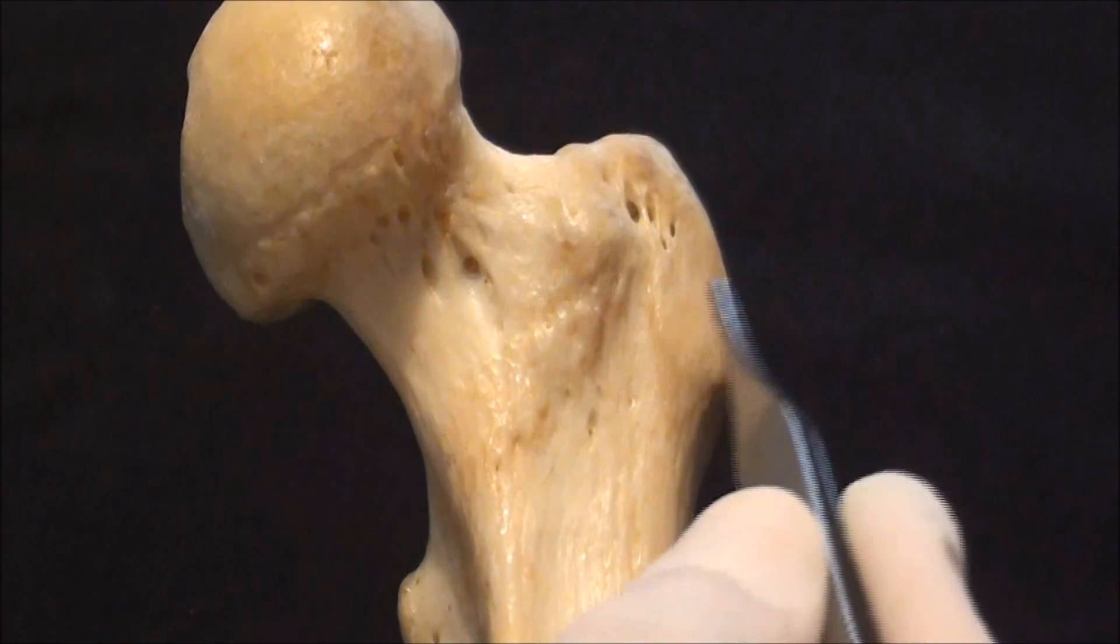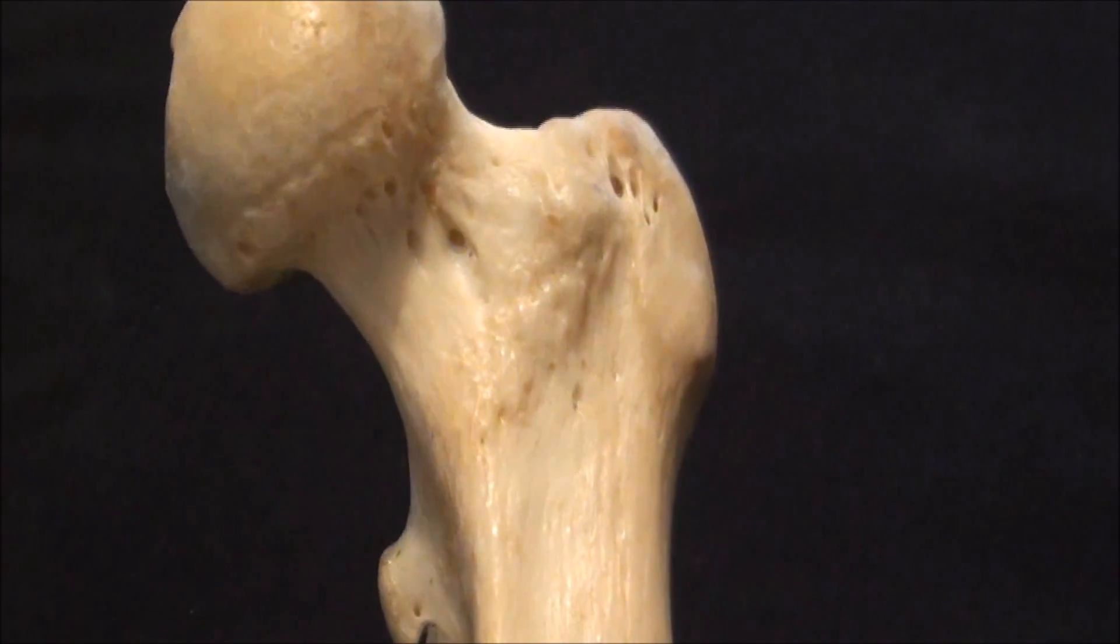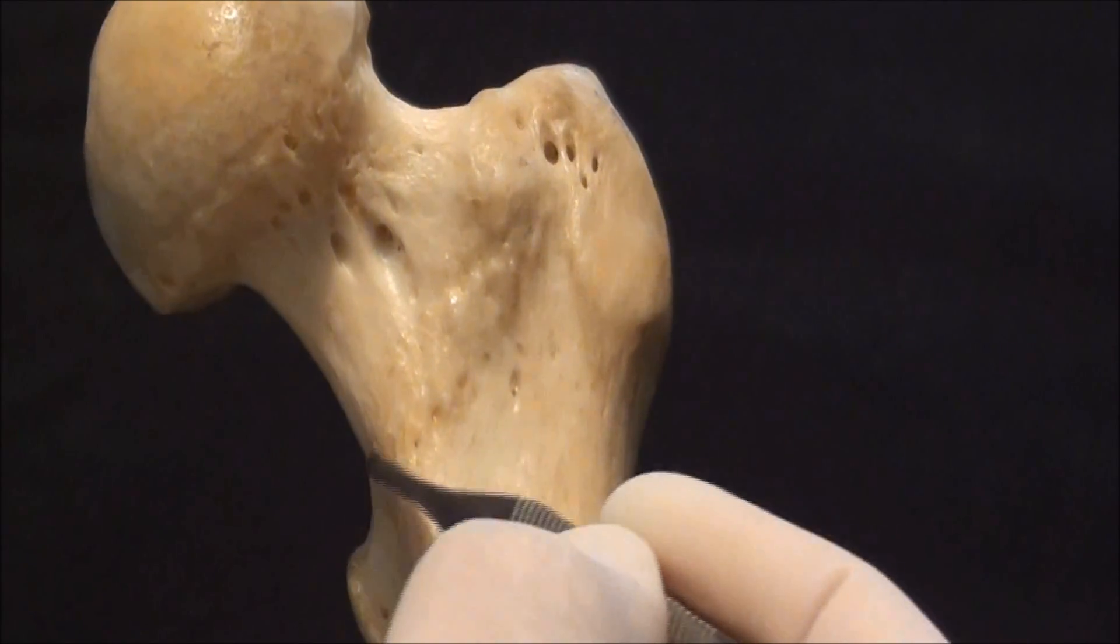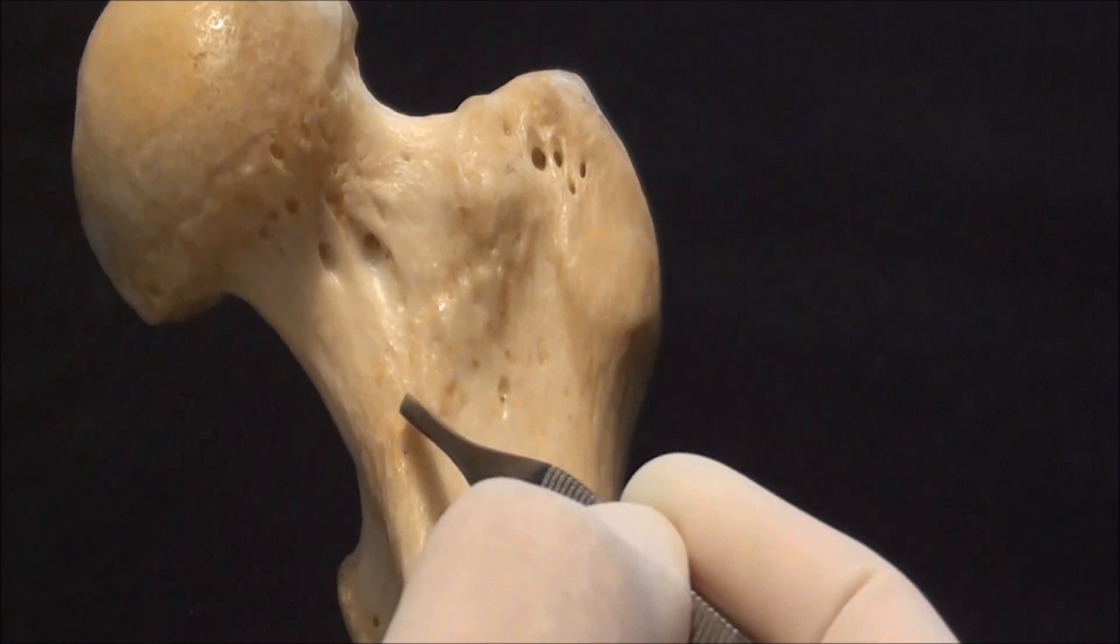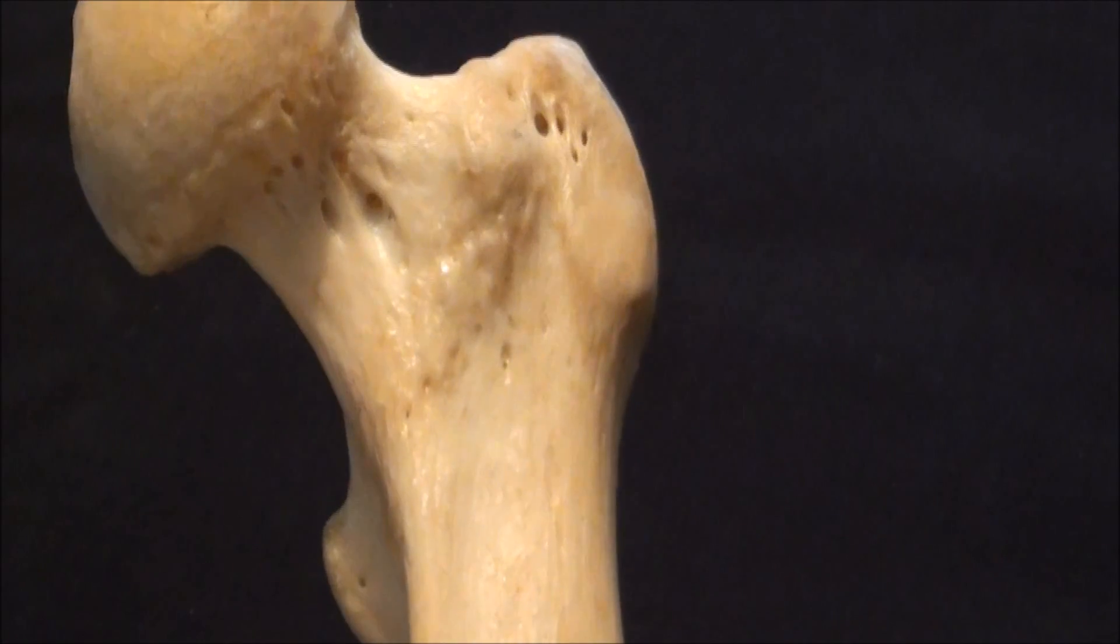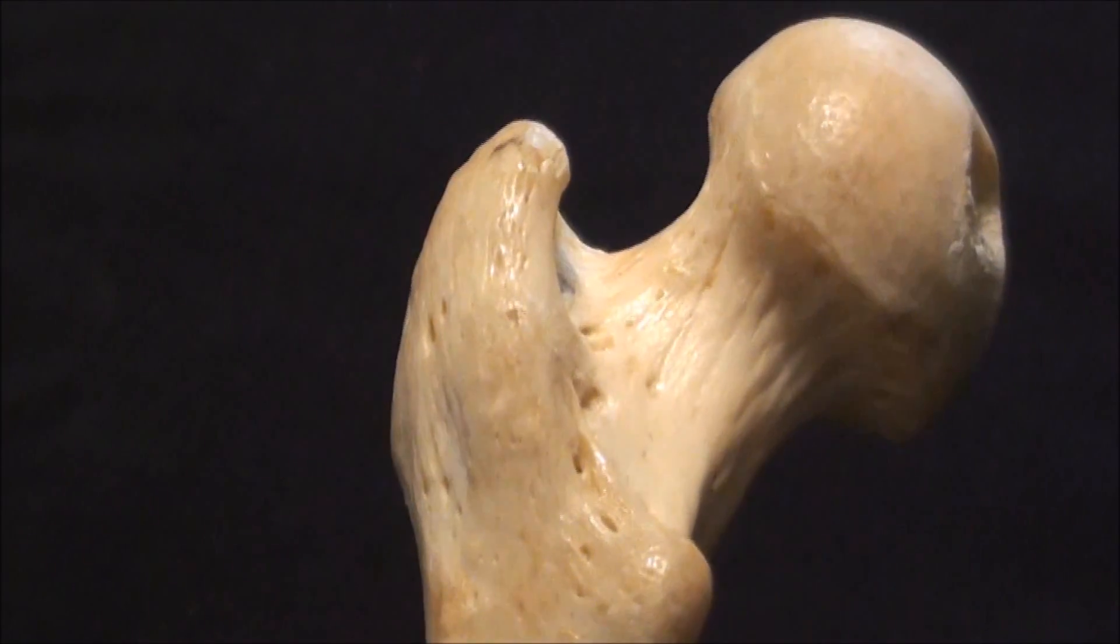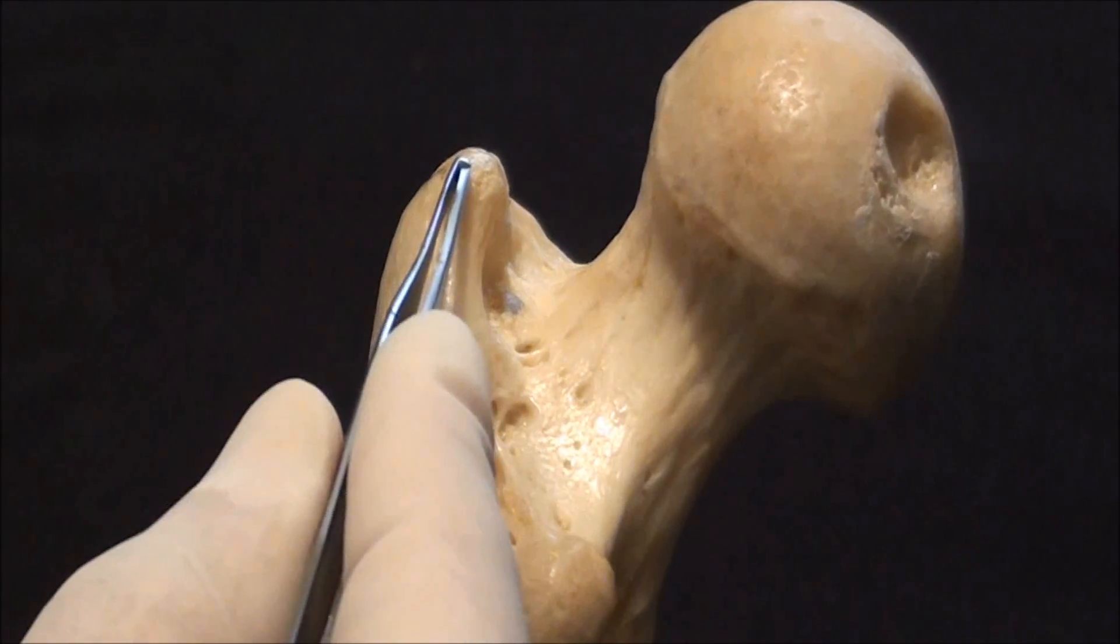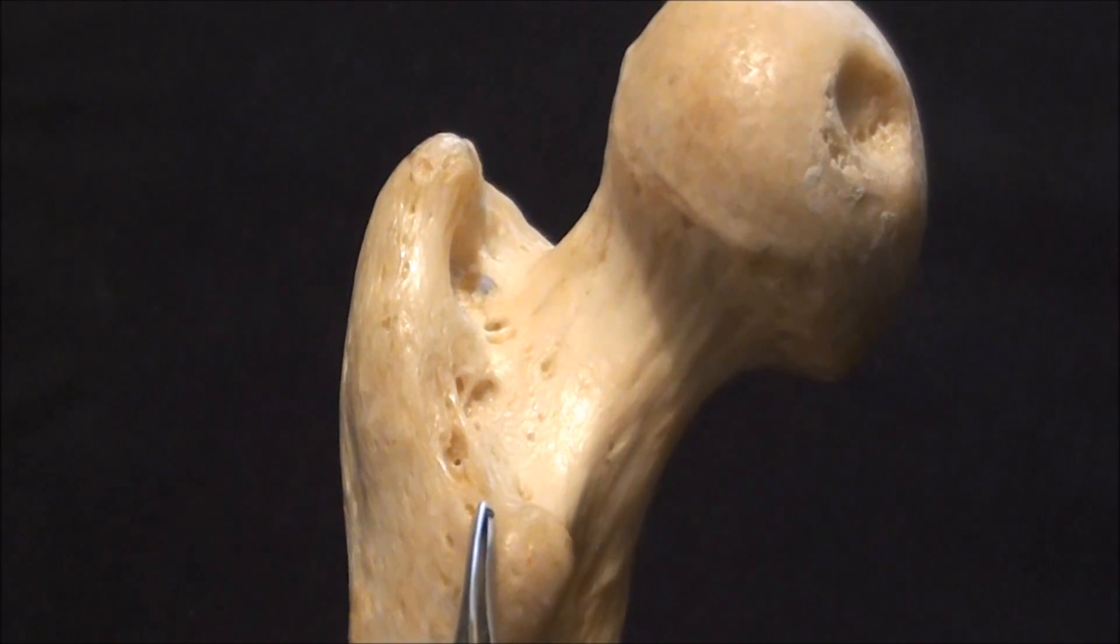As we just confirmed existence of a greater and lesser trochanters of the femur, we can now take a look and confirm. Anteriorly there is inter trochanteric line which is mark of capsular attachment of the hip joint. Fibrous capsule goes and covers this area but when we rotate the bone and see it from the posterior aspect we will find that there is more massive more prominent bony ridge which is called the inter trochanteric crest that is seen on the posterior side of the femur.